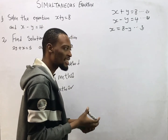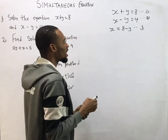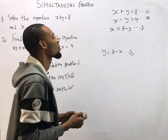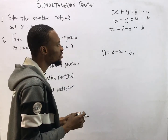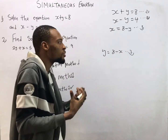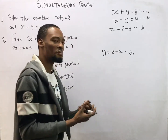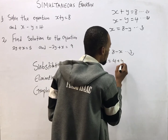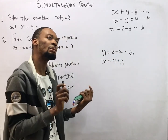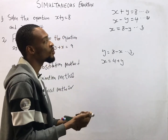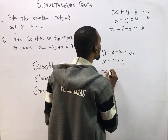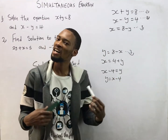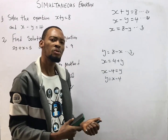Another person can say they want to start by making y the subject formula and write y equals 8 minus s as their equation three. Someone else can choose equation two and make s the subject formula, giving s equals 4 plus y. Or they could make y the subject formula from equation two, giving y equals s minus 4. All these approaches are correct — it's left for you to choose.